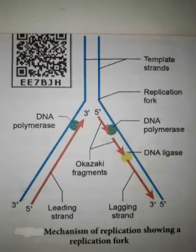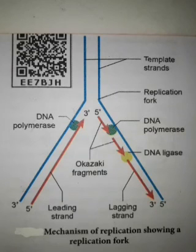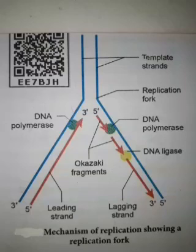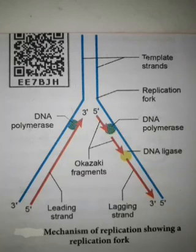DNA polymerase always catalyzes the addition of a nucleotide at the 5' to 3' direction of the new strand — nucleotides are added only at the 3' end. I hope all have understood the mechanism of DNA replication. You have to learn this answer with the diagram. Write the home test and post your answers. Read your daily lessons and don't waste your time. Thank you, children.